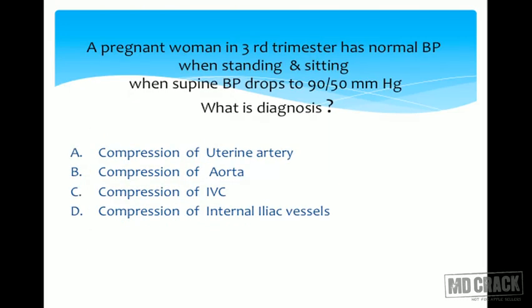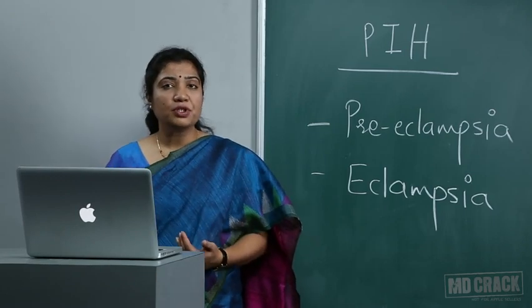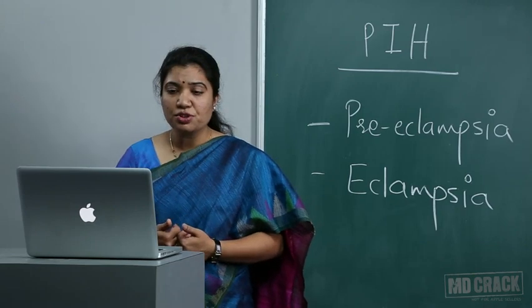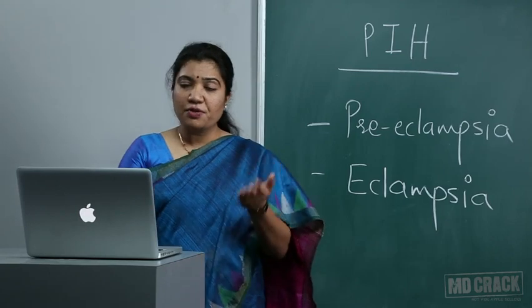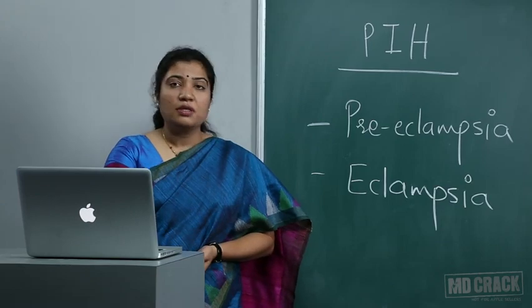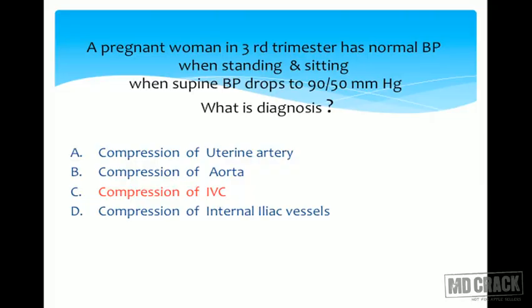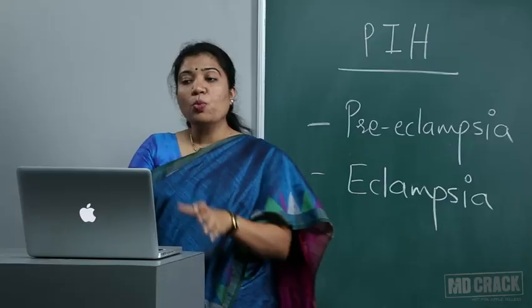An MCQ example: a pregnant woman in the third trimester has normal BP when standing and sitting, but when supine her BP drops to 90/50. This is supine hypotension syndrome — the answer is compression of the inferior vena cava, which reduces venous return, and if collaterals don't compensate, hypotension results. This is not related to pregnancy induced hypertension.